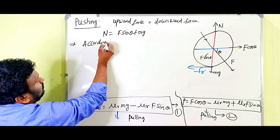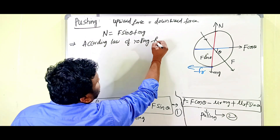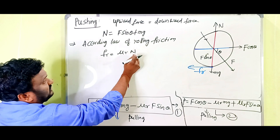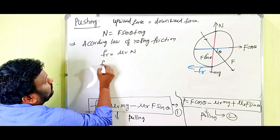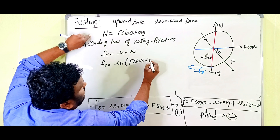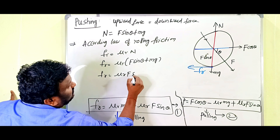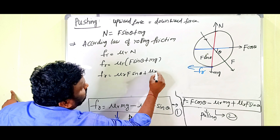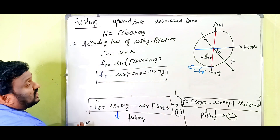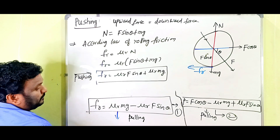According to the law of rolling friction, F_R equals mu_R times N. Substituting N equals F sin theta plus Mg, we get: F_R equals mu_R times (F sin theta plus Mg), which gives F_R equals mu_R·F sin theta plus mu_R·Mg. This is equation number 3 — the frictional force when pushing.